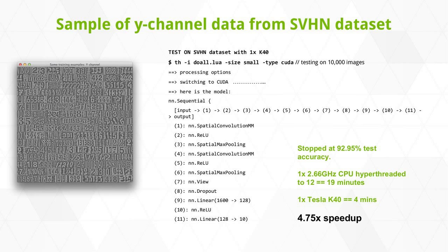Here's a bit more code: you run 'th' then 'doall.lua' — this is Clement Farabet's code from his Madbit site. This particular setting was 'size small', testing on 10,000 images as opposed to the total ~73,627 images in the dataset. My own training stopped at 92.95% accuracy. The speed-up from a 2.66 GHz CPU hyperthreaded to 12 cores was 19 minutes, with a 4.75x speed-up on a K40 GPU.